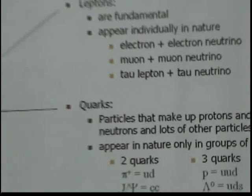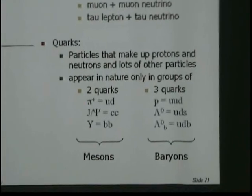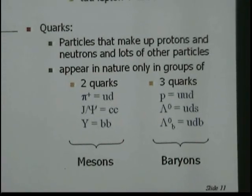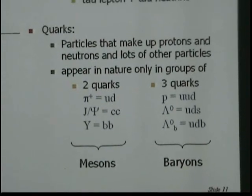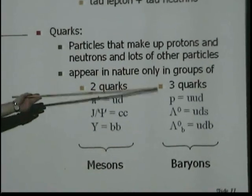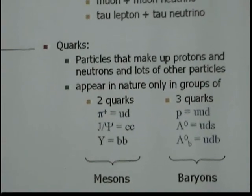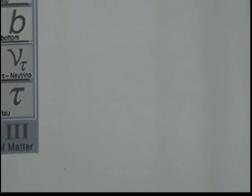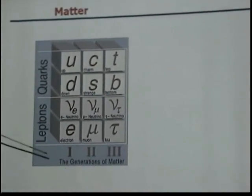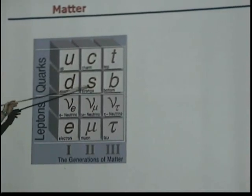Inside an atom you have a nucleus built up of protons and neutrons, which we believe are built up of quarks. Quarks do not appear individually in nature — they only appear in groups of two, called mesons, or groups of three, called baryons. The sum total we call hadrons. There are six quarks in three families: up, down, charm, strange, top, and bottom.